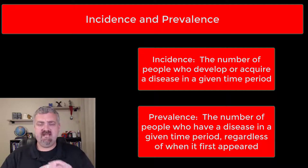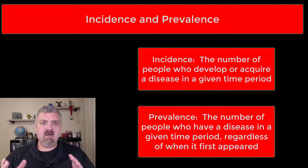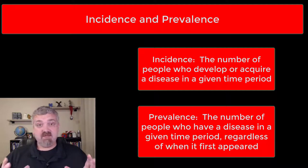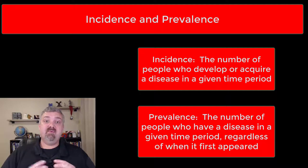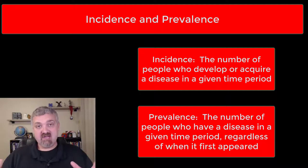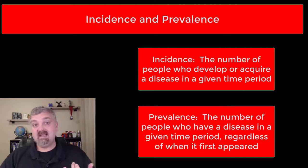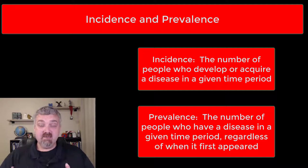Think about HIV for example. About 40,000 Americans get HIV every year, so the incidence of HIV infection in 2019 would be somewhere in the ballpark of 40,000. But the prevalence — how many people have HIV in the United States in 2019 — includes everyone who had the disease in 2018, 2017, 2016 and back. Magic Johnson was infected around 1996 and he's still alive. So the prevalence is the new cases plus the old cases, meaning prevalence will always be a larger number.